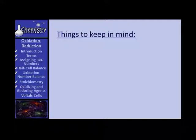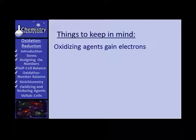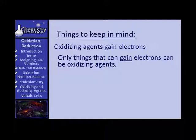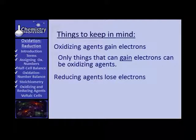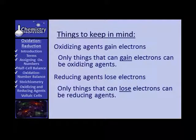There are some things you need to keep in mind when trying to decide whether a particular compound or element could be an oxidizing agent or a reducing agent. Oxidizing agents gain electrons — therefore, the only things that can act as oxidizing agents are those capable of gaining electrons. Reducing agents lose electrons, so the only things that can act as reducing agents are those capable of losing electrons.